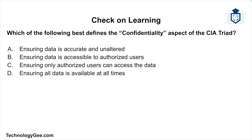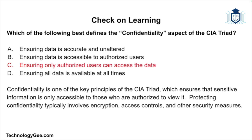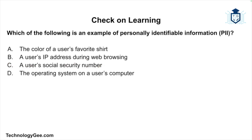Check on learning — first question: Which of the following best defines the confidentiality aspect of the CIA triad? Is it ensuring data is accurate and unaltered? Ensuring data is accessible to authorized users? Ensuring only authorized users can access the data? Or ensuring all data is available at all times? The correct answer is: ensuring only authorized users can access the data. Confidentiality ensures sensitive information is only accessible to those authorized to view it, typically through encryption, access controls, and other security measures.